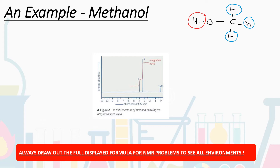If we look at the NMR spectrum, the x-axis is chemical shift, delta, measured in ppm, and note that it increases from right to left. We have energy absorbed going up the y-axis. We see a very big peak at about 3 ppm with an integration trace of 3 — that must be our CH₃ group — and then a peak for one hydrogen at about 4 ppm, which must be our OH group. TMS, our reference compound tetramethylsilane, is given the value of 0 ppm, and everything is measured relative to that.